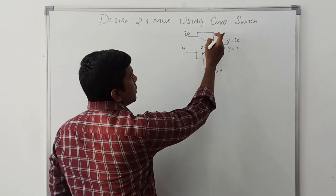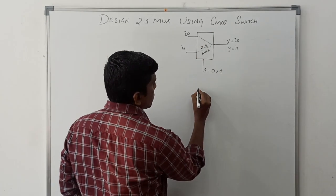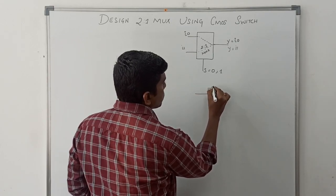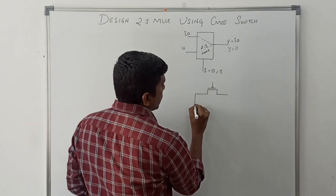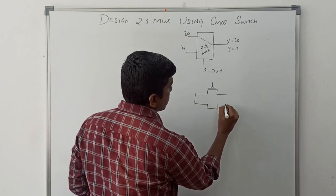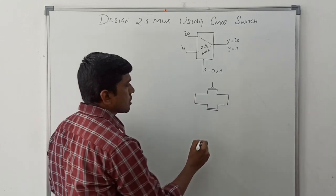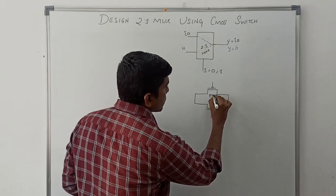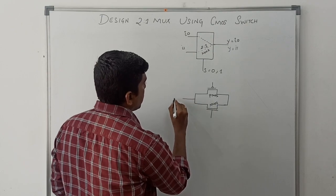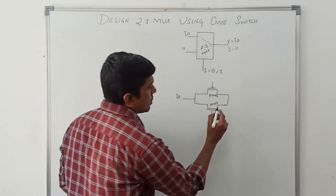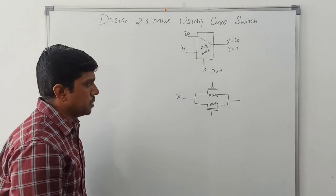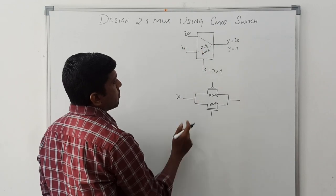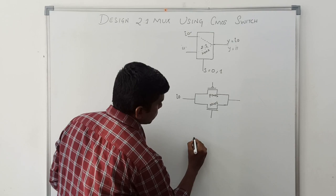Now I am going to draw the structure of a 2-to-1 mux using CMOS switches. Here is the basic symbol of a CMOS switch. This CMOS switch consists of NMOS and PMOS. It is a CMOS switch structure — this one is NMOS, this one is PMOS. So this is the input, and firstly the input represents I0. This one is the output of the CMOS switch. In this structure, we have two variables: I0 and I1 as input variables. I need two CMOS switches for this design.